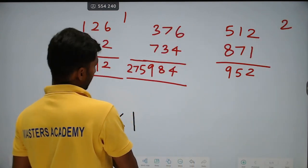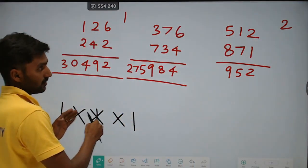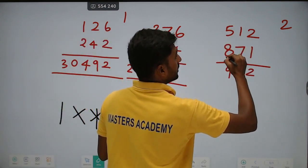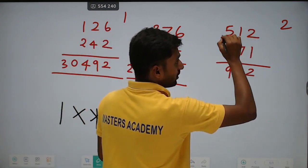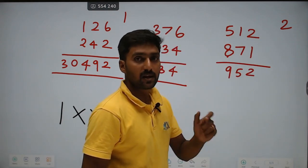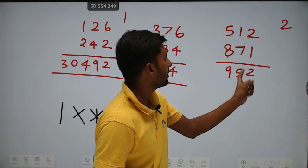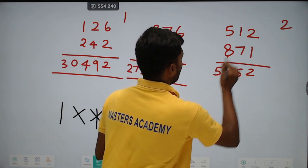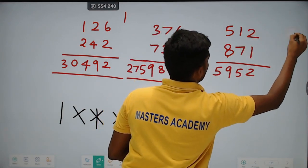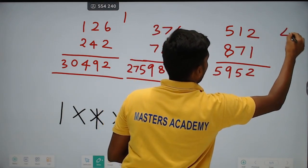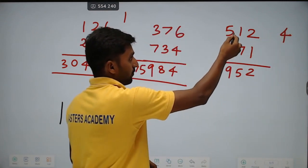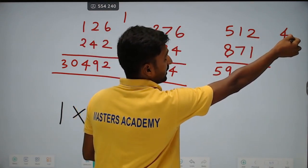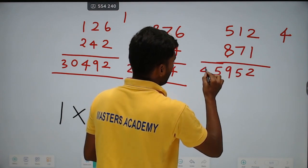Star over, then again cross: 5 into 7 is 35, plus 8 into 1 is 8. So 35 plus 8 is 43. Already carry 2, so 43 plus 2 is 45. Write 5, carry 4. Next straight: 5 into 8 is 40. Already carry 4 available, so 44.